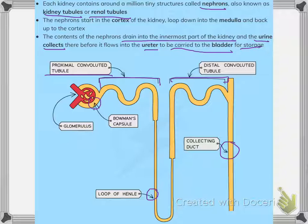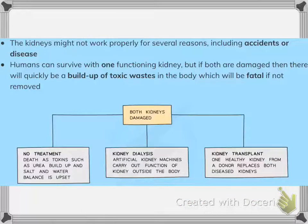Remember that the left side one is the proximal convoluted tubule and the right side one is the distal convoluted tubule. There are several reasons why a kidney might not function properly — it could be due to accidents or disease. Humans can survive with one functioning kidney, but if both kidneys are damaged there will quickly be a buildup of toxic waste in the body.